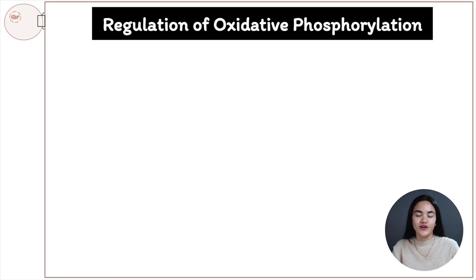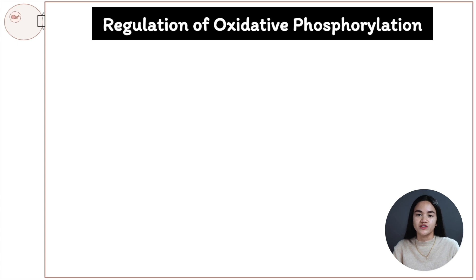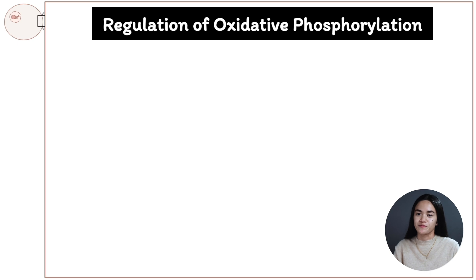In this video, we're going to cover the regulation of oxidative phosphorylation. By the end of this video, you'll understand how the concentration of ATP and ADP impacts the rate of electron transfer, the rate of glycolysis, the citric acid cycle, and oxidative phosphorylation. We're also going to break down the coordinated regulation of all of these pathways, focusing on where they all connect: oxidative phosphorylation.